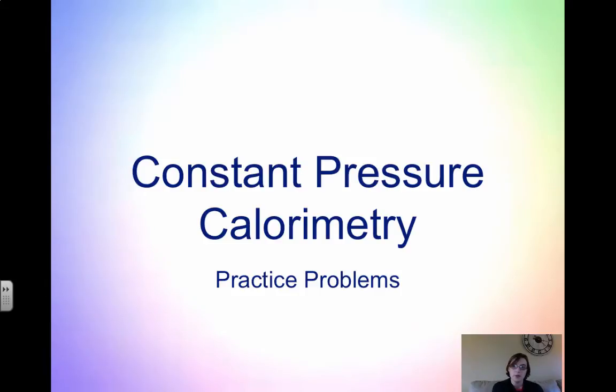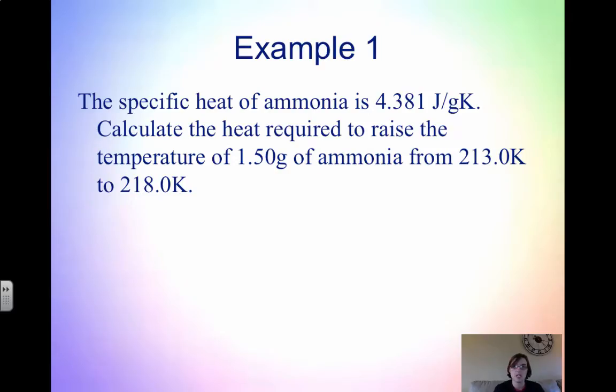Hi everyone, welcome to this video on some example problems on constant pressure calorimetry or coffee cup calorimetry. This first example says that the specific heat of ammonia is 4.381 joules per gram degree Kelvin. We need to calculate the heat required to raise the temperature of 1.5 grams from 213 to 218 Kelvin.